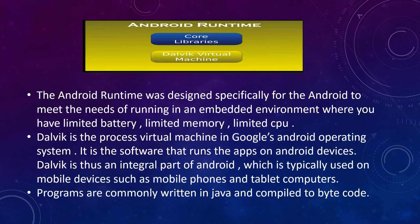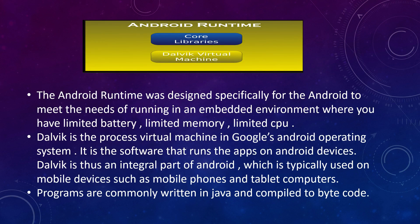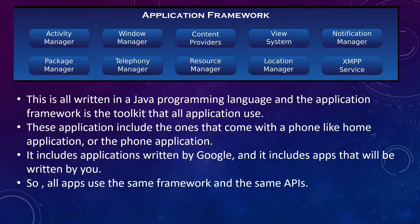Android Runtime was designed specifically for Android to meet the needs of running in an embedded environment with limited battery, memory, and CPU. Dalvik is the process virtual machine in Google's Android operating system — it is the software that runs apps on Android devices. Programs are commonly written in Java and compiled to bytecode, but can also be written in C using the native C interface.